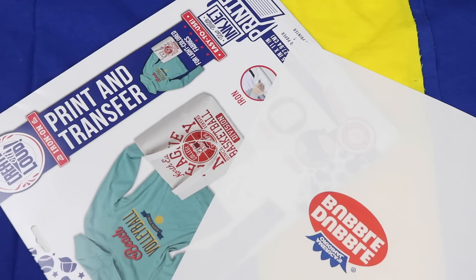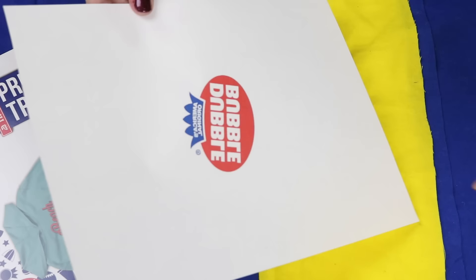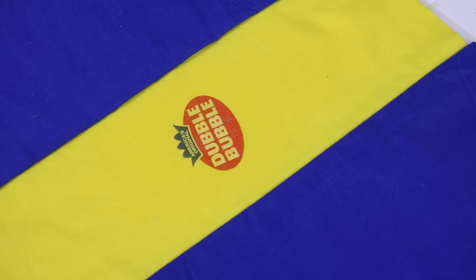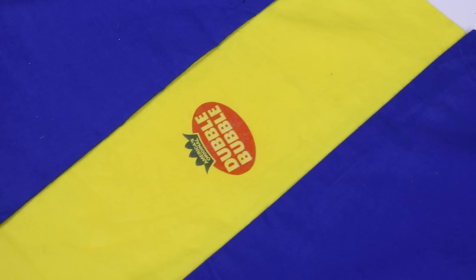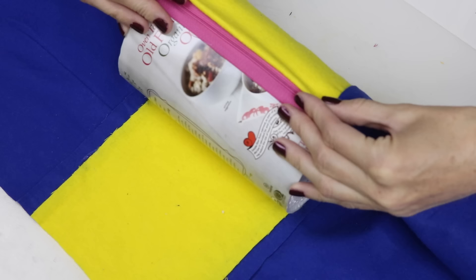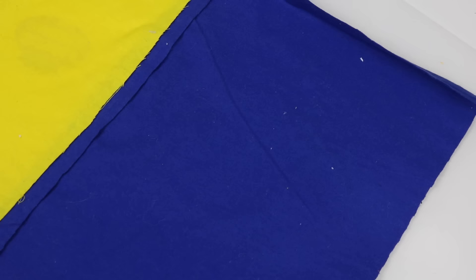I used inkjet transfer paper to mirror out the image. I cut that out, pressed it on according to the instructions. The next step I did was to give the edges a clean look. I measured it out to my container, hot glued the edges down.